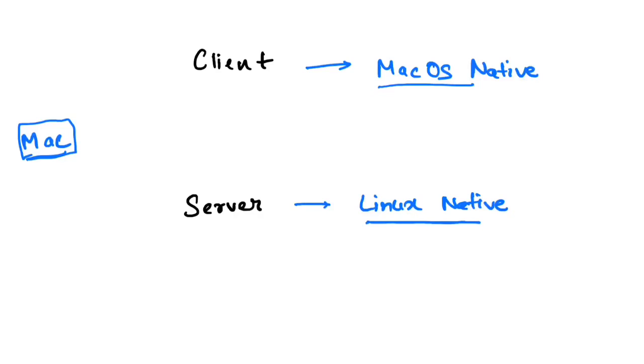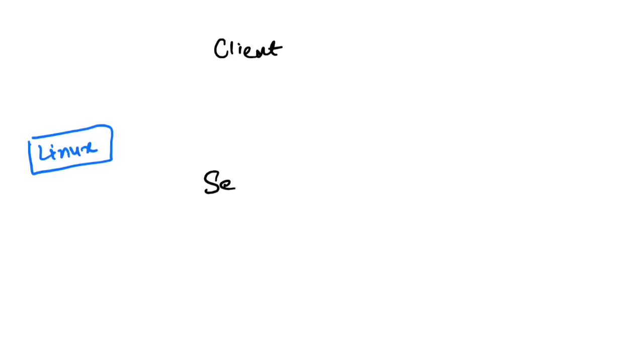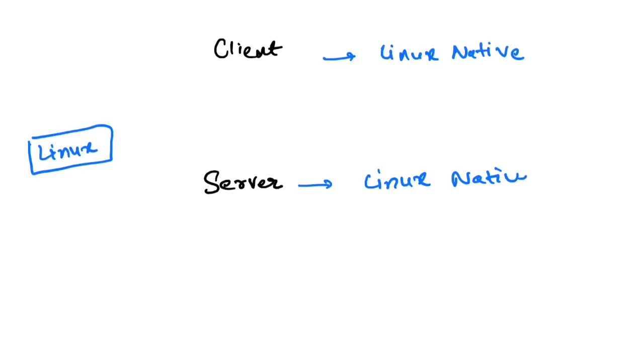The last but most widely used platform is Linux — whether it's an application server or a local machine. On Linux, both the client and the server are Linux native. All commands are supported through the Linux interface, and all containers run as Linux containers.